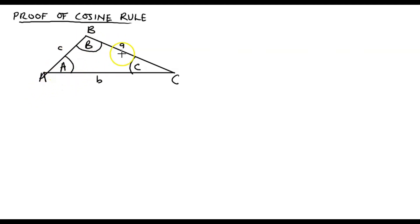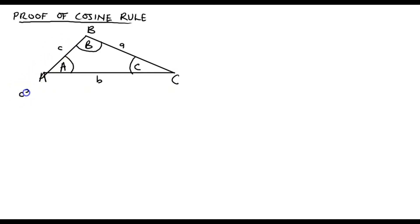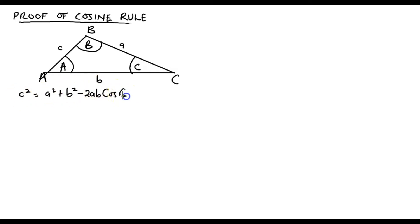What then would be the cosine rule for this triangle? The cosine rule is stated as: small c squared is equal to small a squared plus small b squared, minus two times the sides a and b, then cos of the angle capital C.